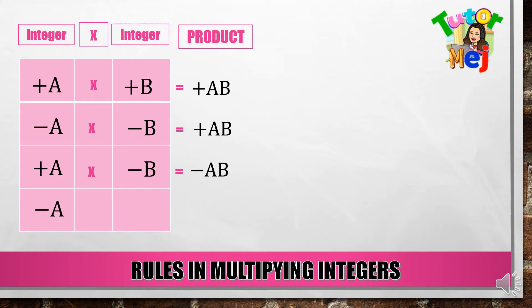Negative A times positive B. Ito ay equal to — negative times positive is negative. Then multiply again, AB. So ang result, negative AB.